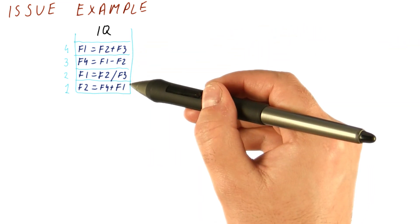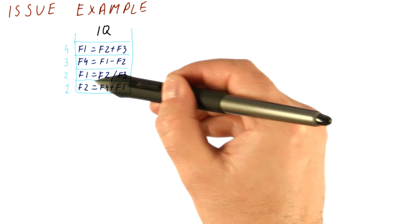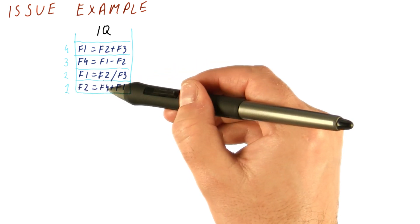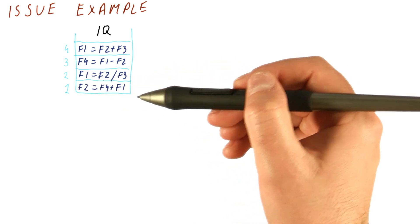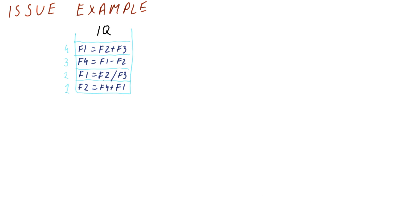So we will issue in program order, which means the first instruction that we're going to issue is going to be this F2 equals F4 plus F1. This is really an add, but I'm writing it this way because it's more compact.